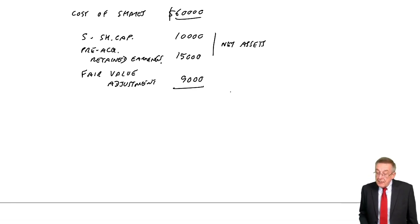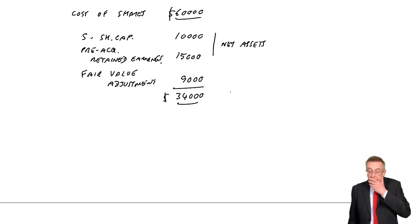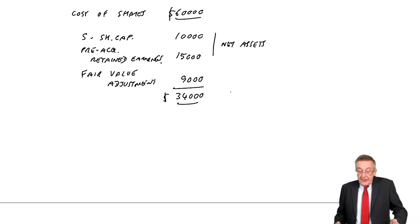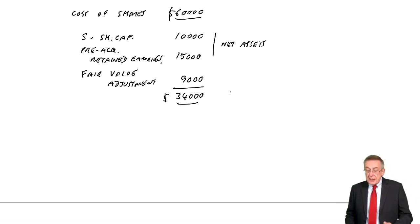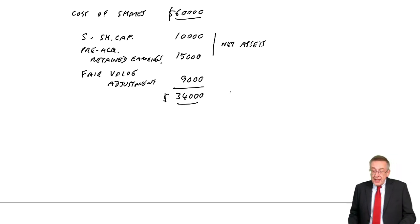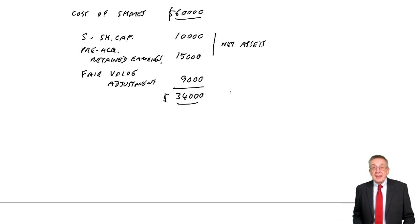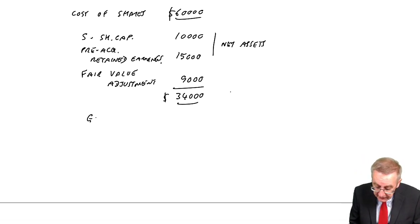It means we valued the business at £34,000. But why on earth did we pay £60,000? Well, it's something I referred to in a much earlier chapter — maybe the value of the assets in your company is £34,000, but you're already a successful company making profits. Understandably, we might be prepared to pay more for the goodwill. So if we pay more than the assets are worth — we pay £60,000, assets are worth £34,000 — the extra is called the goodwill arising on consolidation.